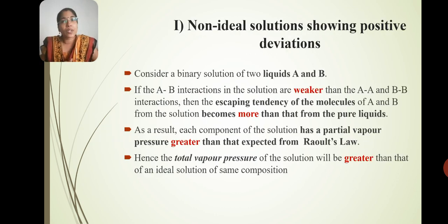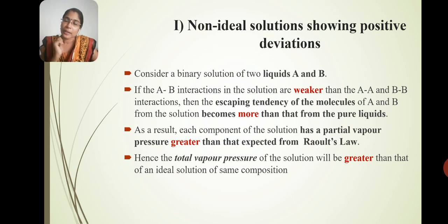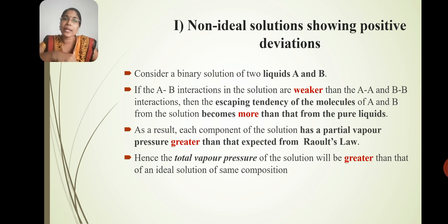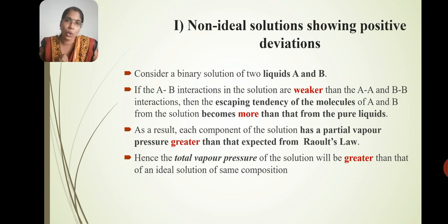Non-ideal solutions showing positive deviations — one binary solution contains liquid A and liquid B. The escaping tendency of the molecules of A and B from the solution becomes more than that from the pure liquids. The A-B interactions are weaker, causing molecules to escape more. The partial vapour pressure will be greater than that predicted by Raoult's law.